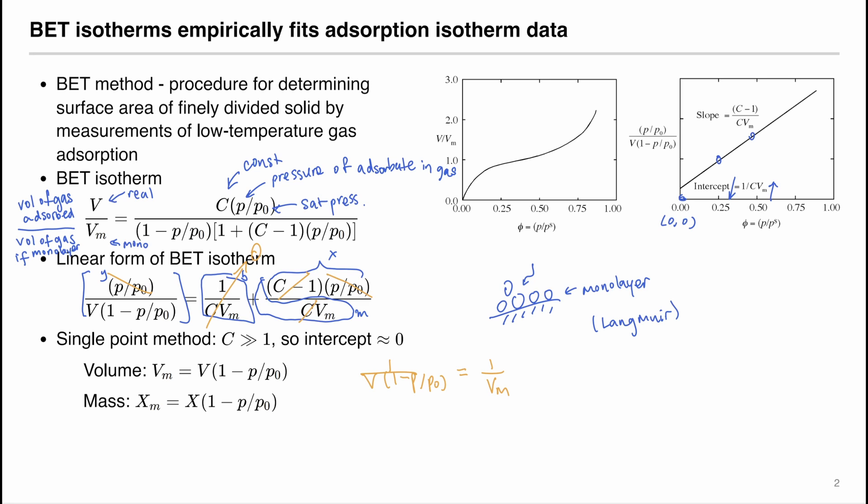So if we rewrite this and take the inverse of both sides, we will get that the monolayer volume is equal to the volume multiplied by one minus p divided by p zero. If we write it in mass basis, denoted in x, it will be the mass of the monolayer equals the mass, the actual mass multiplied by one minus pressure divided by p zero.